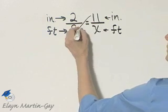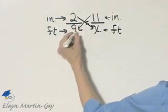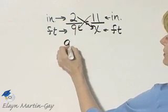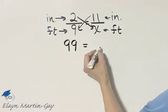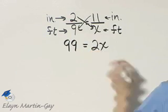Let's do so by cross products. Here I have 9 times 11, that is 99, is equal to 2 times x, or 2x.